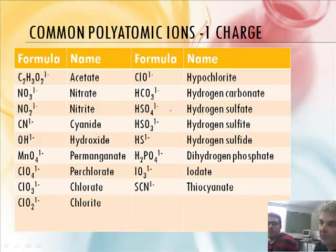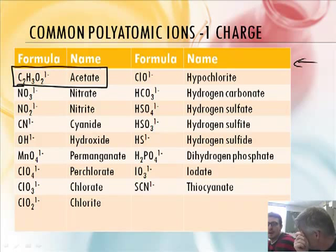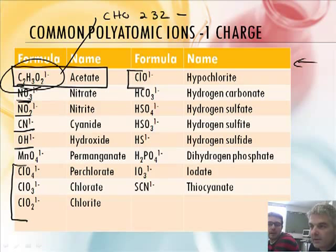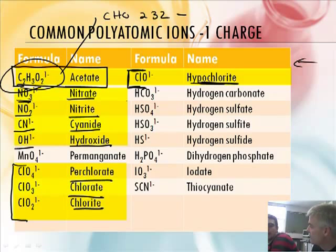Here is a list of polyions with a negative one charge. The ones you need to know are acetate — you memorize it as C₂H₃O₂ negative — and nitrate, nitrite. Learn those. Also cyanide and hydroxide. And then the chlorate series — you really just have to learn chlorate, and there's a pattern for the rest. So those are the ones you need to memorize for the negative ones.